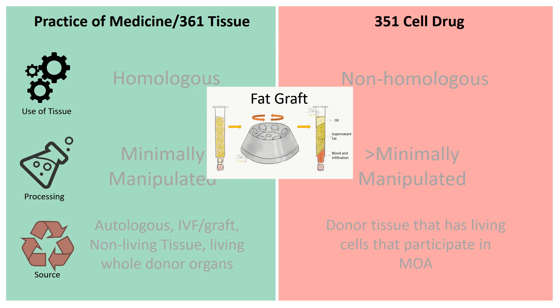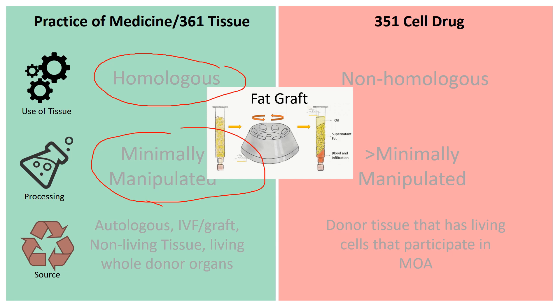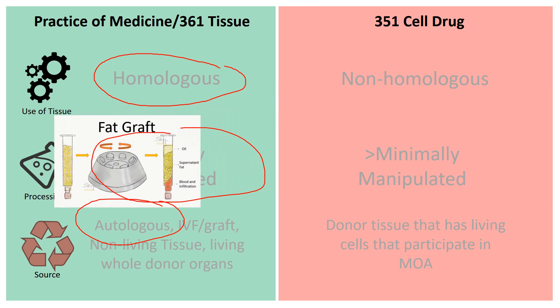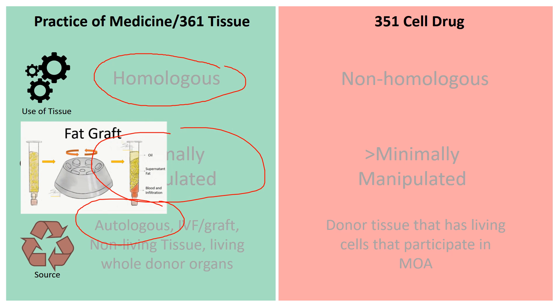Now let's look at a fat graft, because based on recent regulatory decisions, it's considered homologous for orthopedic use because it's providing structural support and cushioning in the body, and it's being used that way from an orthopedic standpoint. It is minimally manipulated and it is autologous. So it's going to be firmly on the left side under practice of medicine.